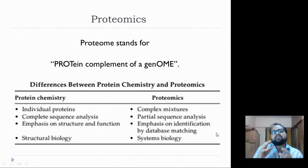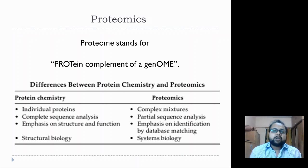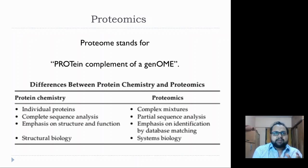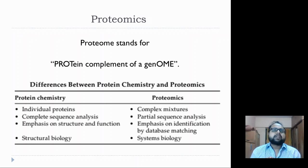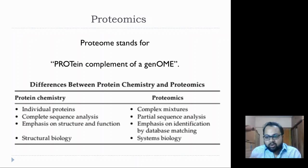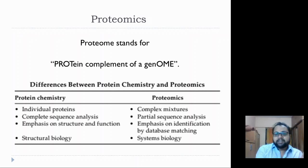When we are talking about proteomics, the emphasis is more on identification by database matching, which involves systems biology — your signaling pathways, your metabolic pathways. It is the systematic analysis of PPIs or protein-protein interactions. When talking about protein complexes, we can have protein-DNA interactions, protein-RNA interactions, and protein-protein interactions. Proteomics deals with the interaction of proteins with any of these things, all of which are part of systems biology.